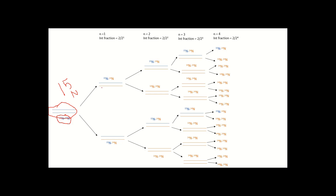In generation 2, the ¹⁵N/¹⁴N duplex gives rise to one ¹⁵N/¹⁴N and one ¹⁴N/¹⁴N; the ¹⁴N/¹⁴N duplex gives rise to two ¹⁴N/¹⁴N molecules. The result is 2 intermediate-density duplexes and 2 light duplexes, for a total of 4 (2²). The fraction is 2 divided by 2².